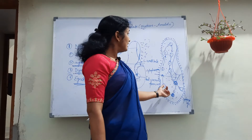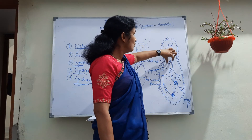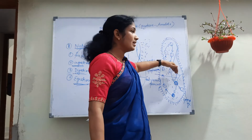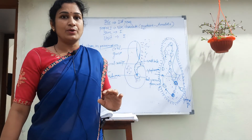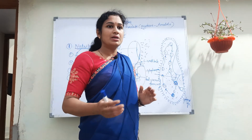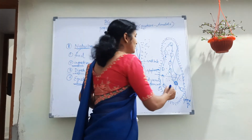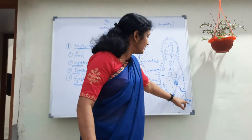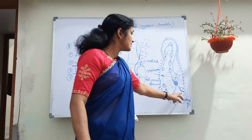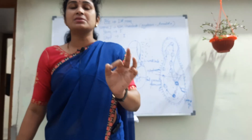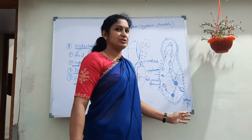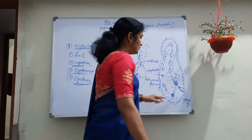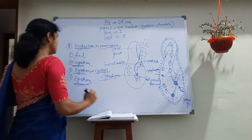Some undigested food or waste material is also released from the body of Paramecium through a special spot called the cytopyge. Through this cytopyge, the residual or waste material is removed and eliminated from the body of Paramecium — that is egestion.